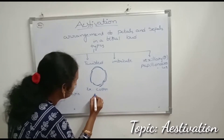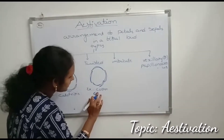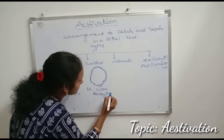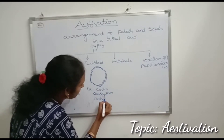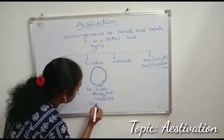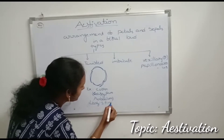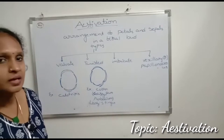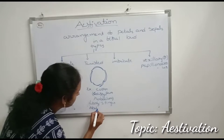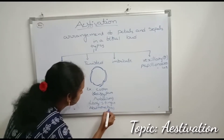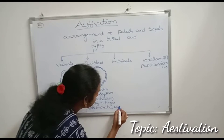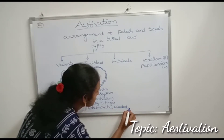The scientific name of cotton is Gossypium herbaceum. The scientific name of lady's finger is Abelmoschus esculentus.